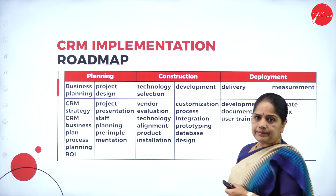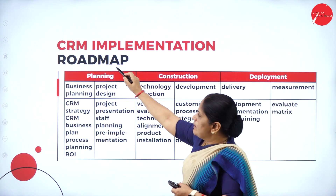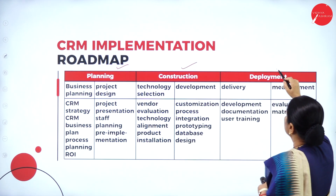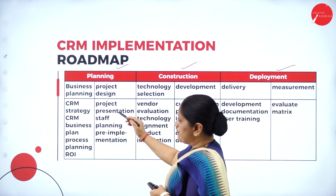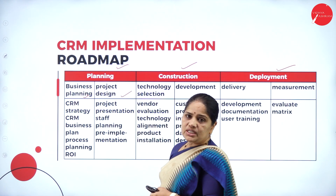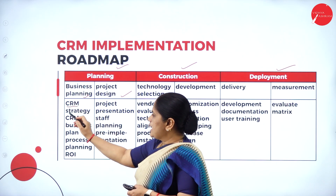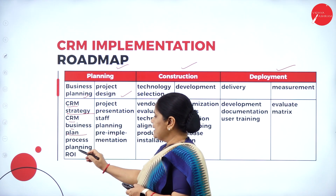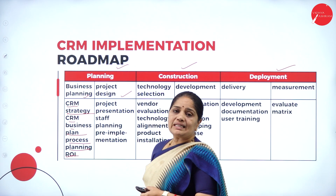Looking at the diagram, we have three sections: one is the planning section, second is the construction, and third is the deployment. In the planning section, we have two aspects: one is business planning, and the other is project design. Under business planning, we have the CRM strategy which has to be framed, then the CRM business plan, process planning, and the most important one — the ROI, which is Return on Investment.